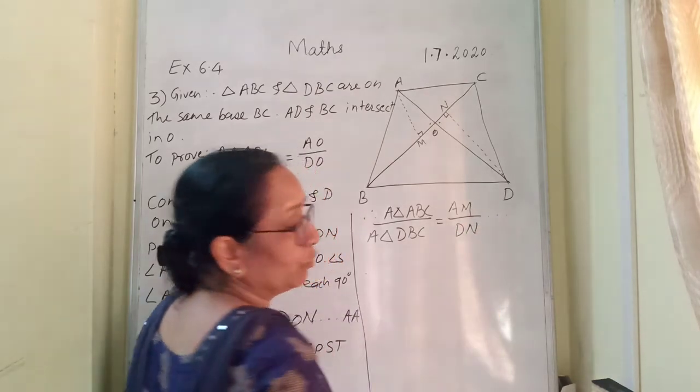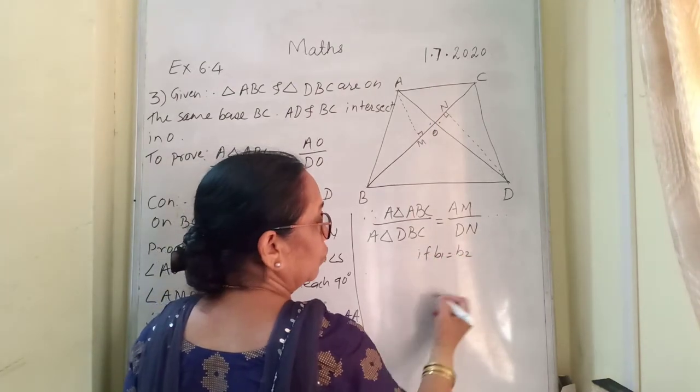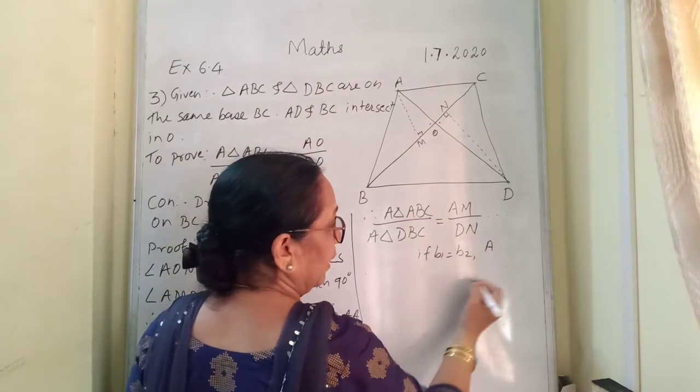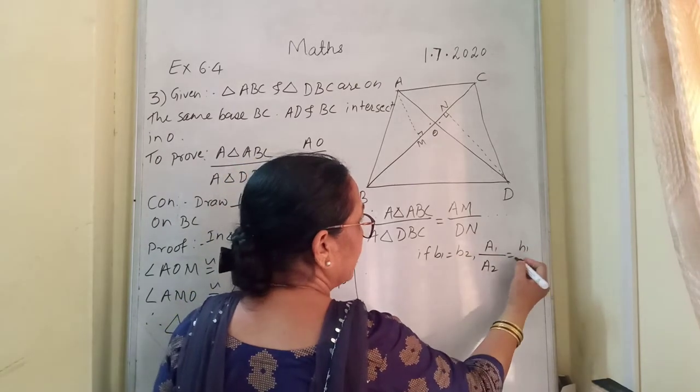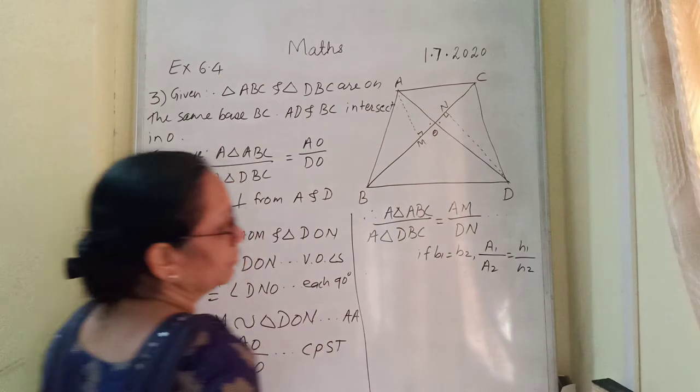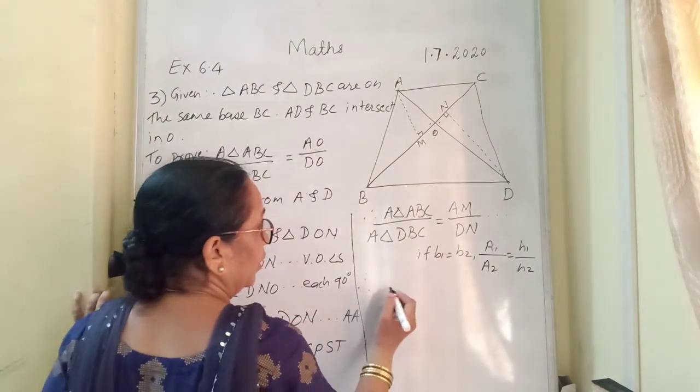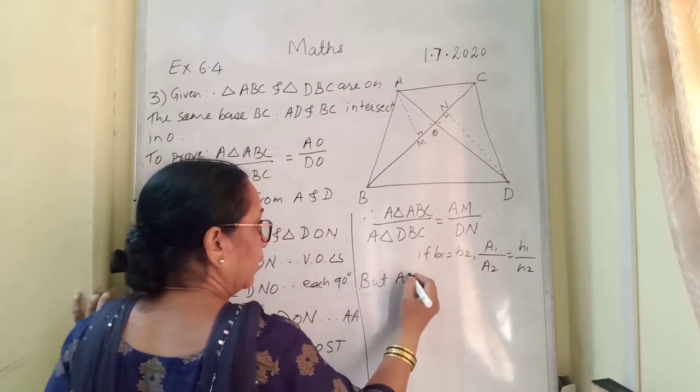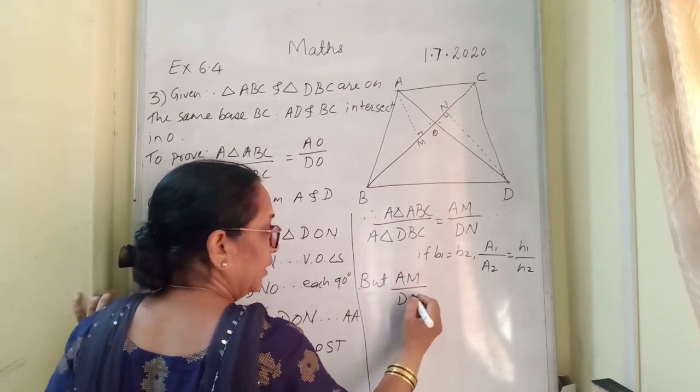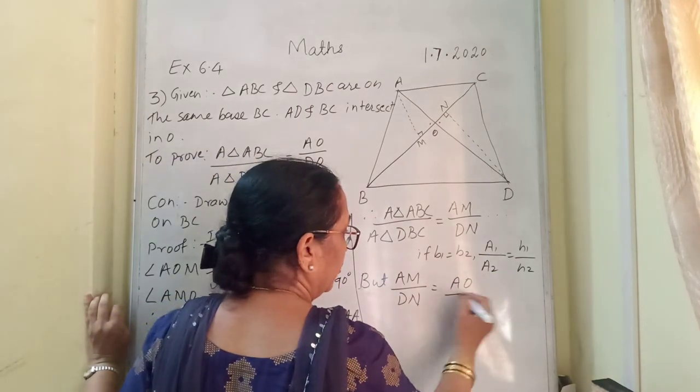If you want, if you want you can write, if B1 is equal to B2, A1 upon A2 is equal to H1 upon H2. That can be written. Correct? Therefore, but AM upon DN is equal to AO upon DO.